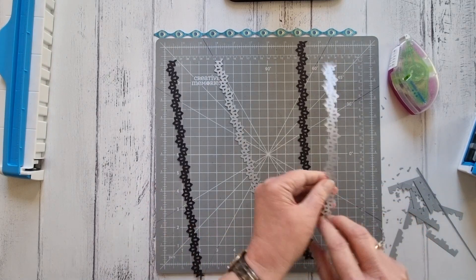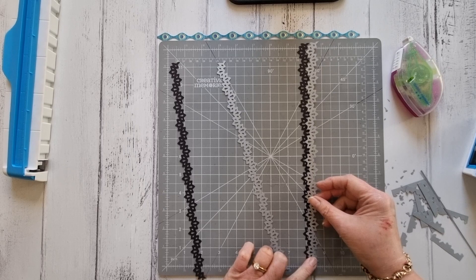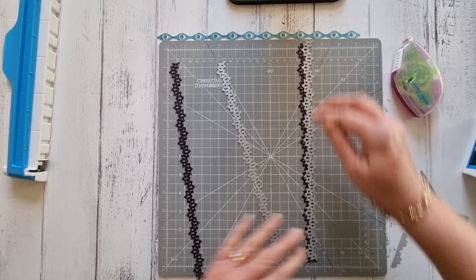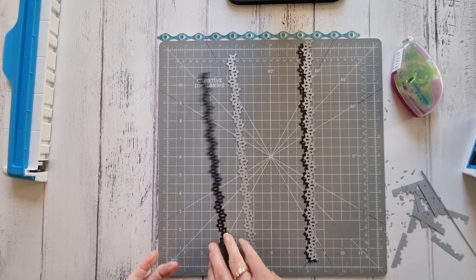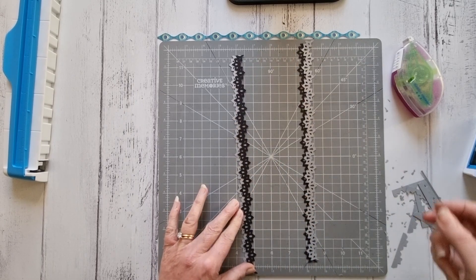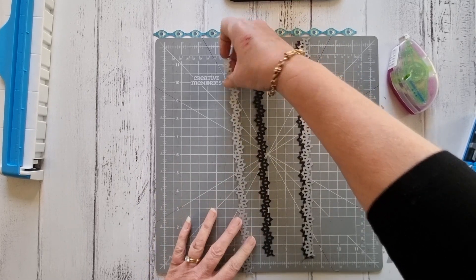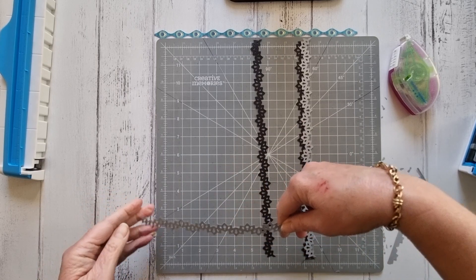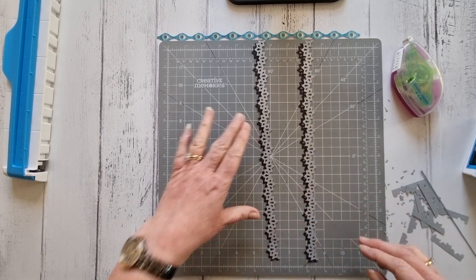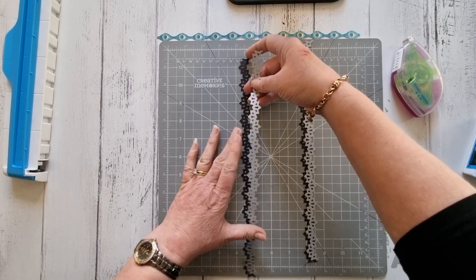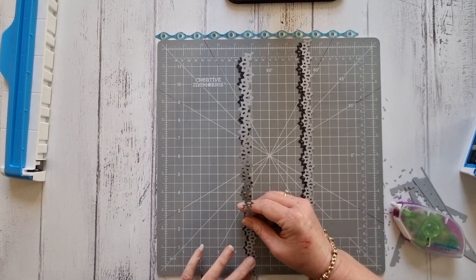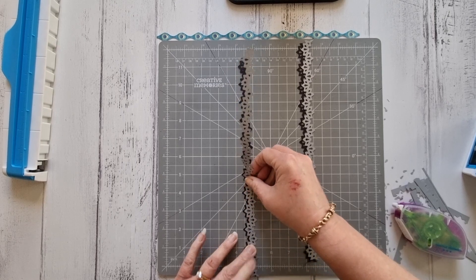Using our repositionable tape runner, let me get that the right way, we're going to adhere them just so you can see the black slightly underneath. Let me go ahead and do that for you. It'll be like that, and then we're going to join them together. You can see it just gives a really lovely shadow effect.